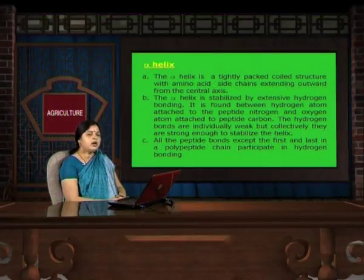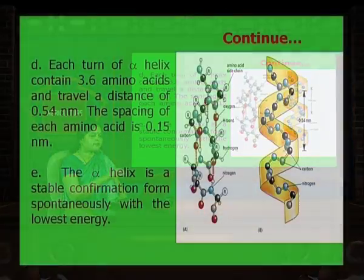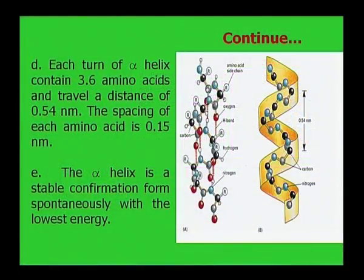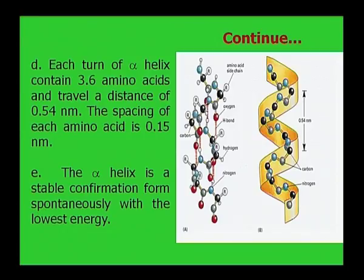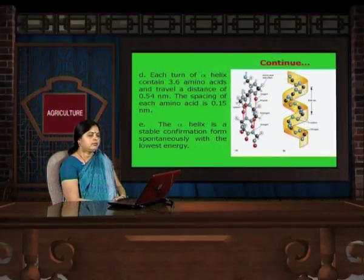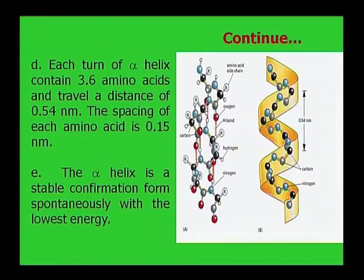In the next slide we can see how the alpha helix structure is formed. In the diagram you can see that the alpha helix hydrogen bond forms between the hydrogen atom of the peptide nitrogen and the oxygen atom of the carbonyl carbon. Each turn of the alpha helix contains about 3.6 amino acids and travels a distance of 0.54 nanometers. The spacing of each amino acid is 0.15 nanometers. The alpha helix is a stable conformation formed spontaneously with the lowest energy.